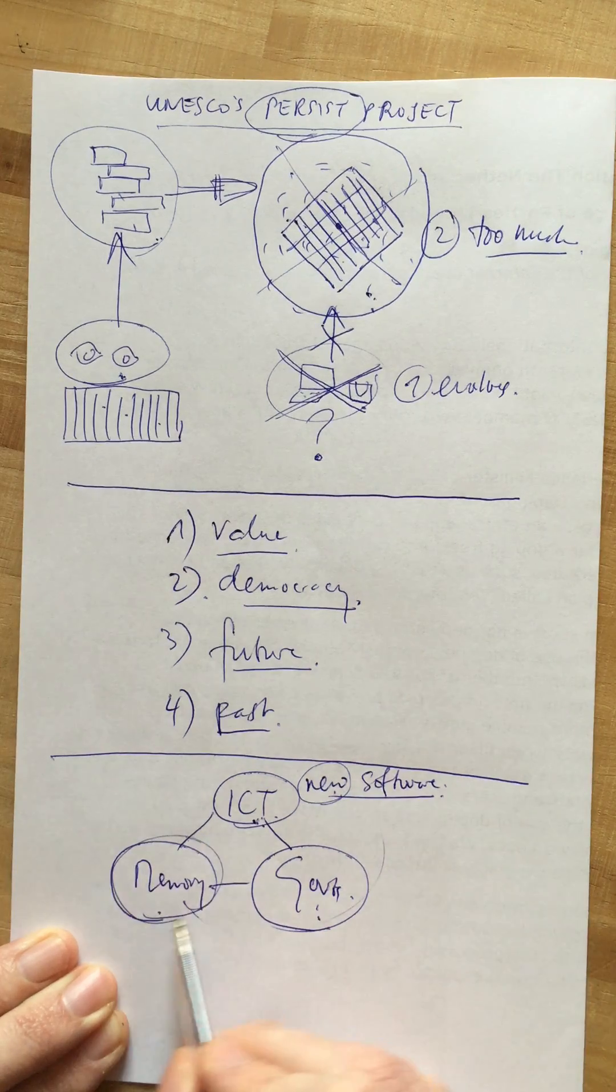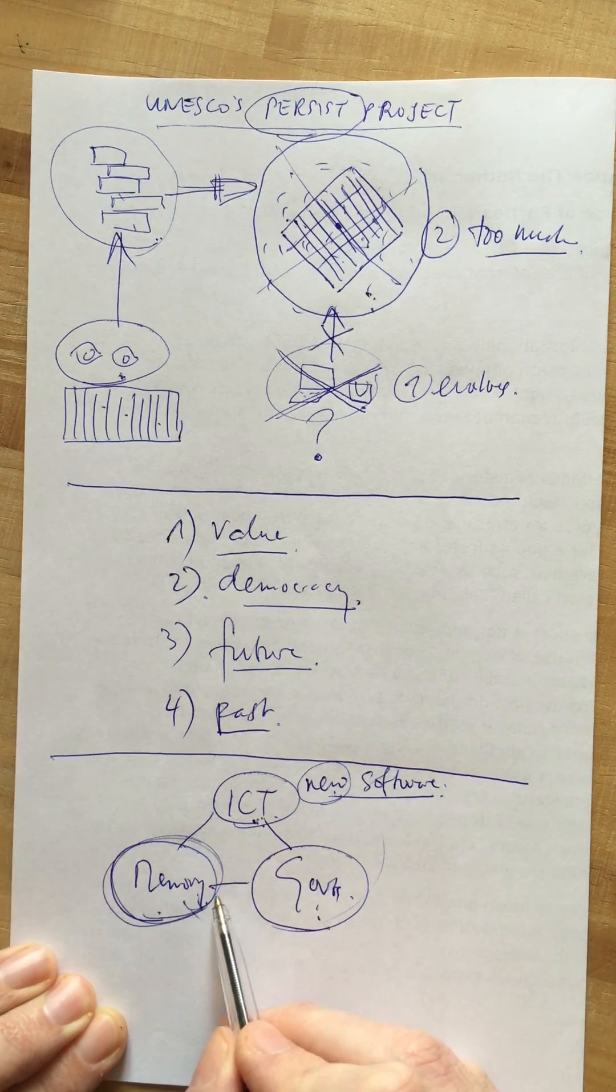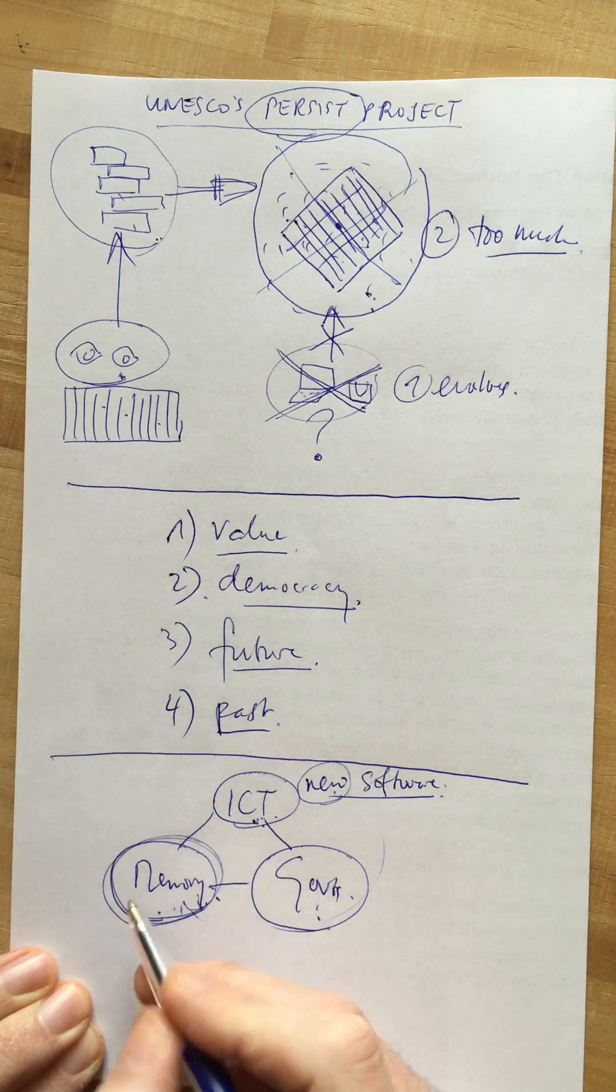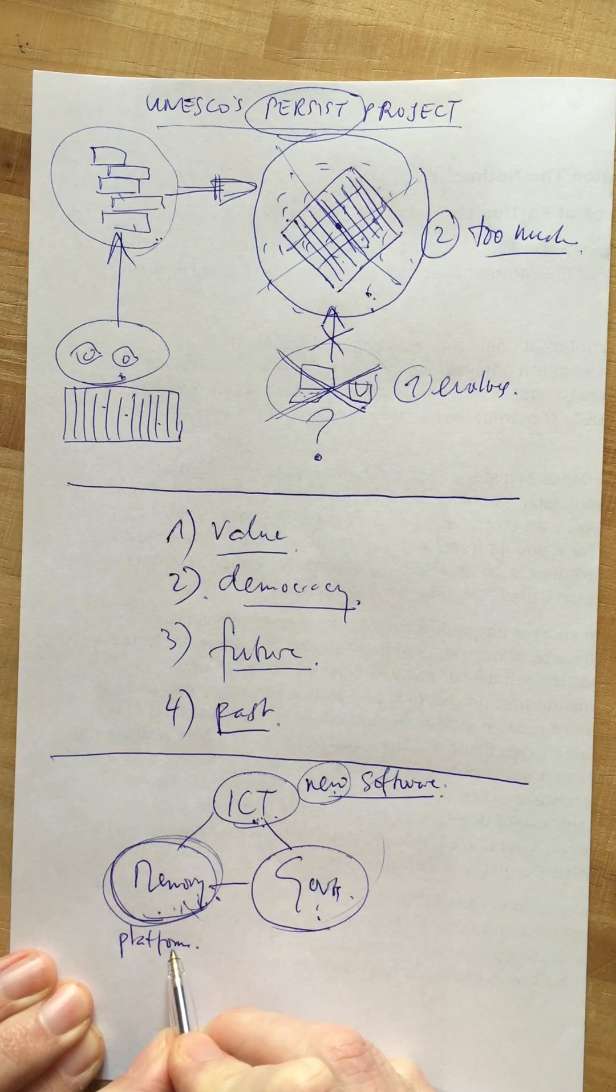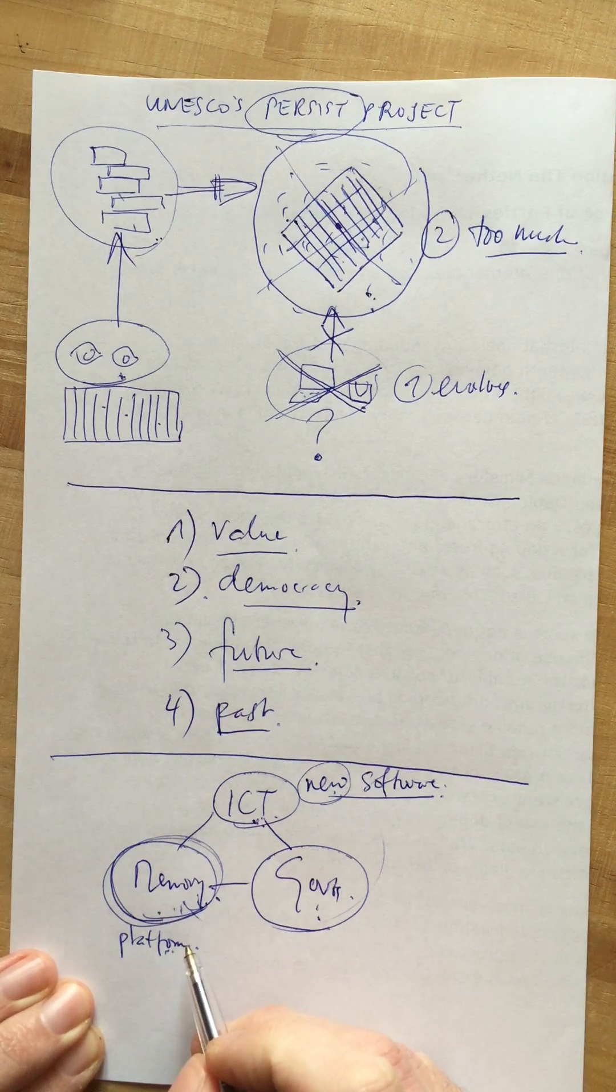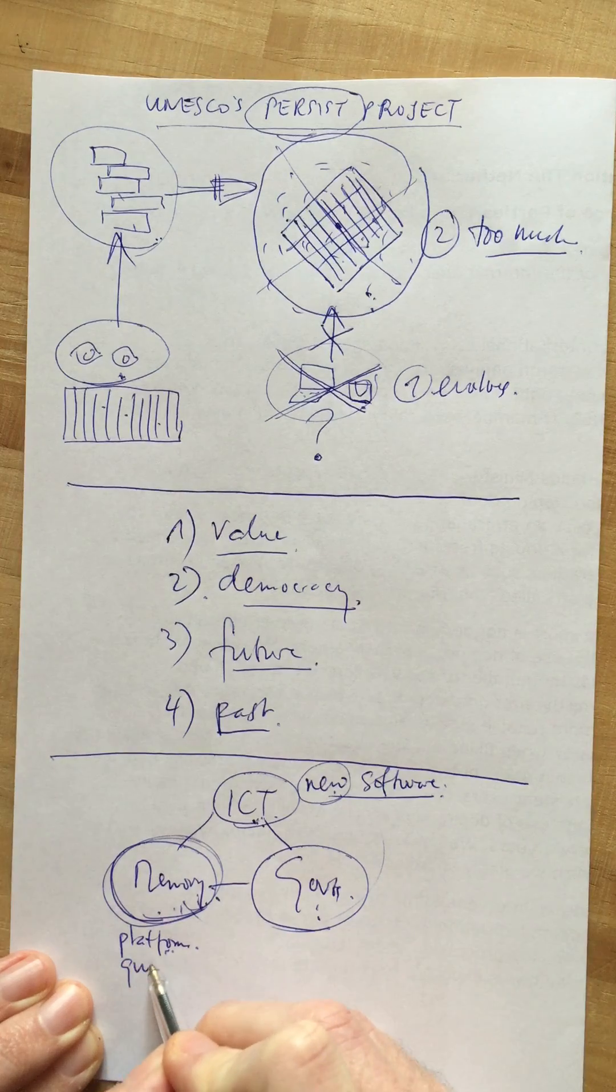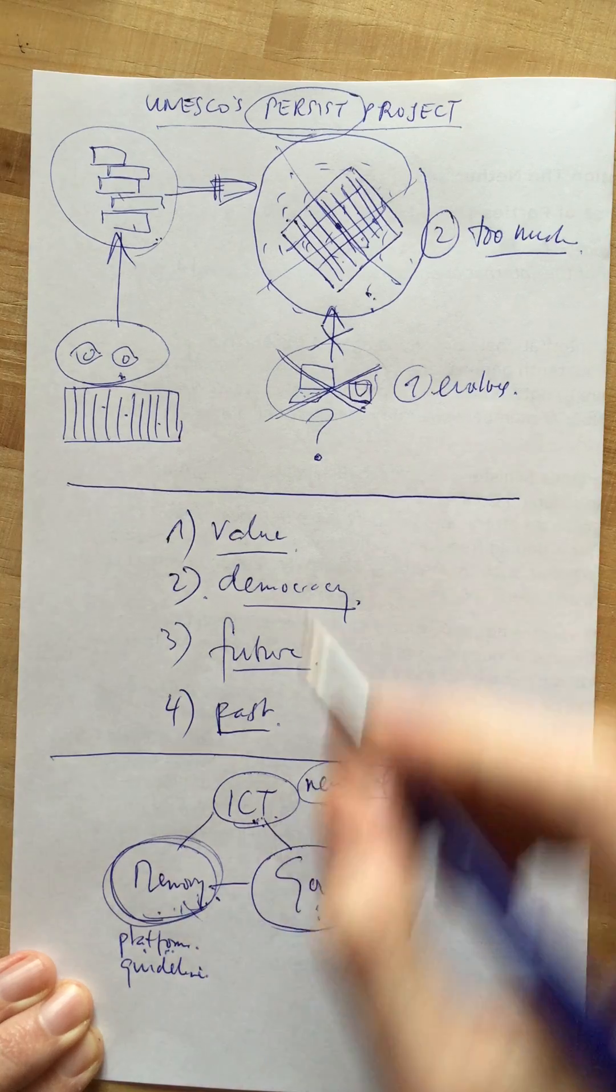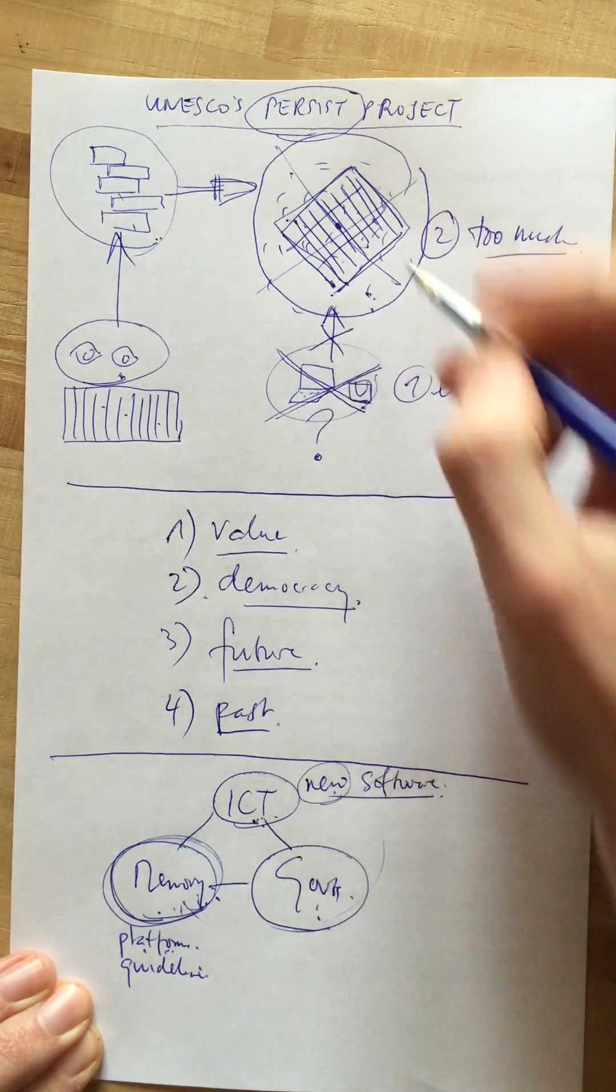Now let's look at memory institutions. They need to preserve digital information and keep it accessible. So Persist produces a platform of old software that is needed to read old documents like documents in WordPerfect for example, or documents that are written on floppy disks. Secondly it produces a guideline for the selection of digital documents. It helps memory institutions to decide what to keep and what not to keep, which is very difficult.